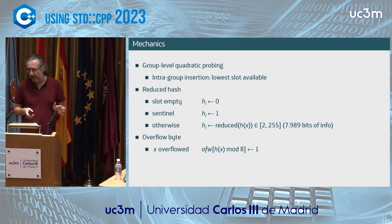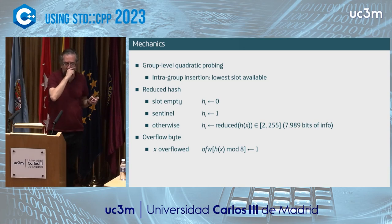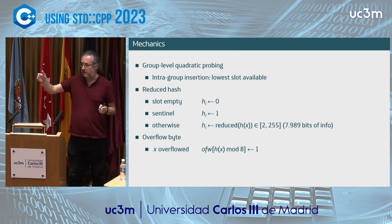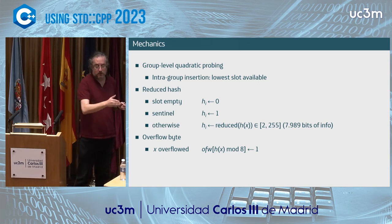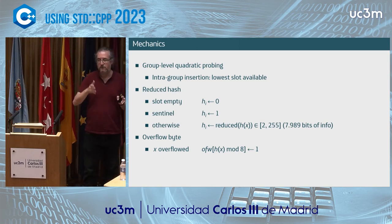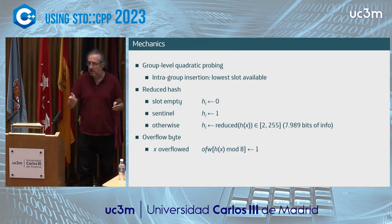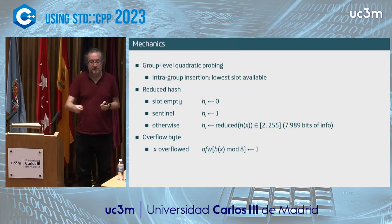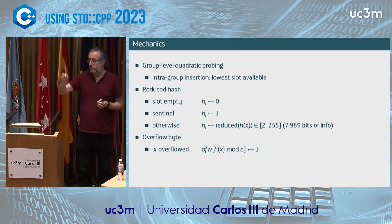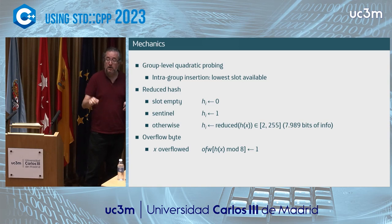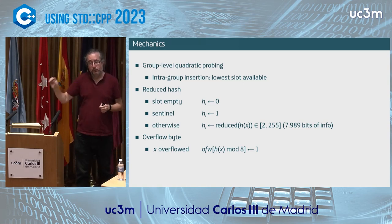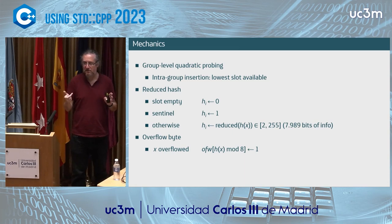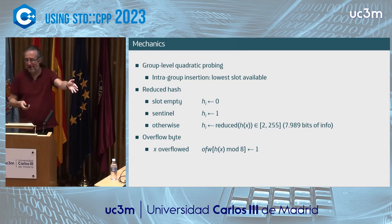The overflow byte has 8 bits, meaning I can classify hash values into 8 classes — take modulo 8 — and inspect the associated bits to determine whether for a given hash I need to probe further. This is perhaps the trickiest part of the whole implementation. It took me months to figure this out.